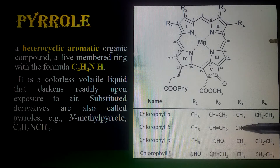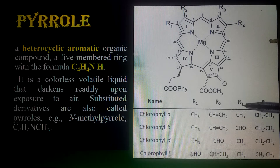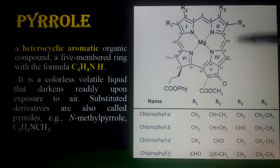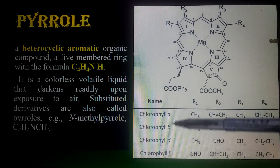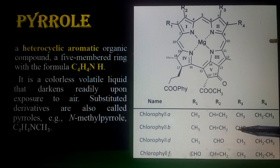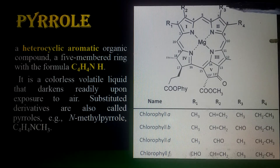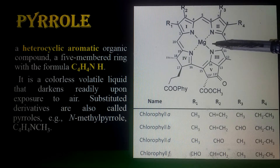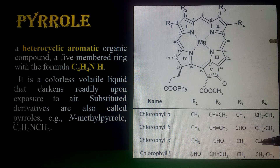In chlorophyll a, a methyl group is present at R3. In chlorophyll b, a carbonyl or aldehyde group is present at R3. Keep this in mind for MCQs. This is the main difference between chlorophyll a and b — at the R3 alkyl group, chlorophyll a has methyl while chlorophyll b has aldehyde.